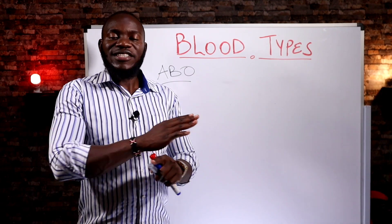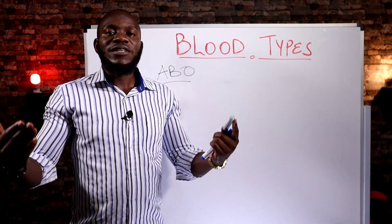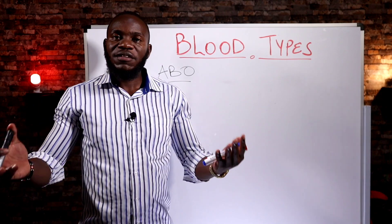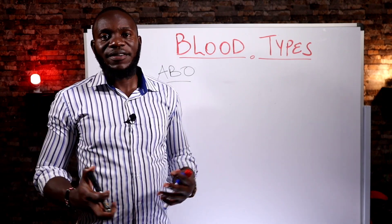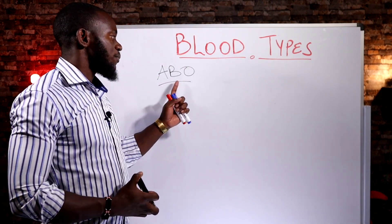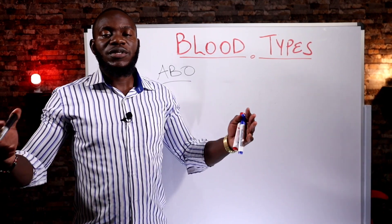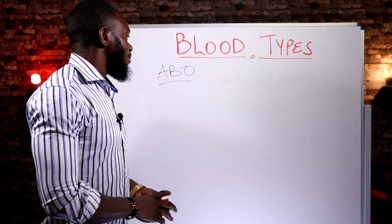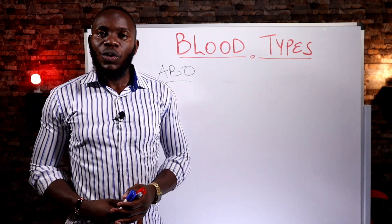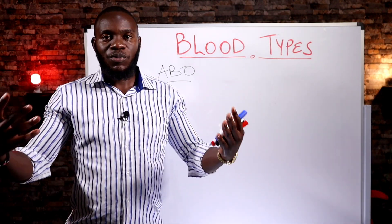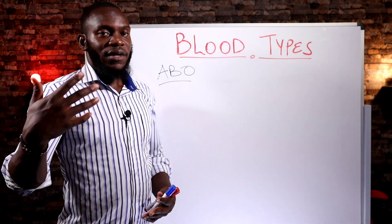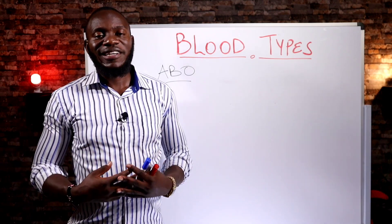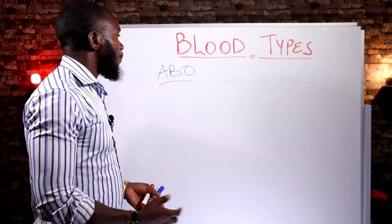Now remember, for ages we have been doing blood transfusions and all that, and people have been surviving, and others have been dying. Why? Because of this. So today, I want to take time to take you through the different blood types that come as a result of ABO, and how — who can get blood from who, and how these reactions occur for those who, unfortunately, lose their lives.